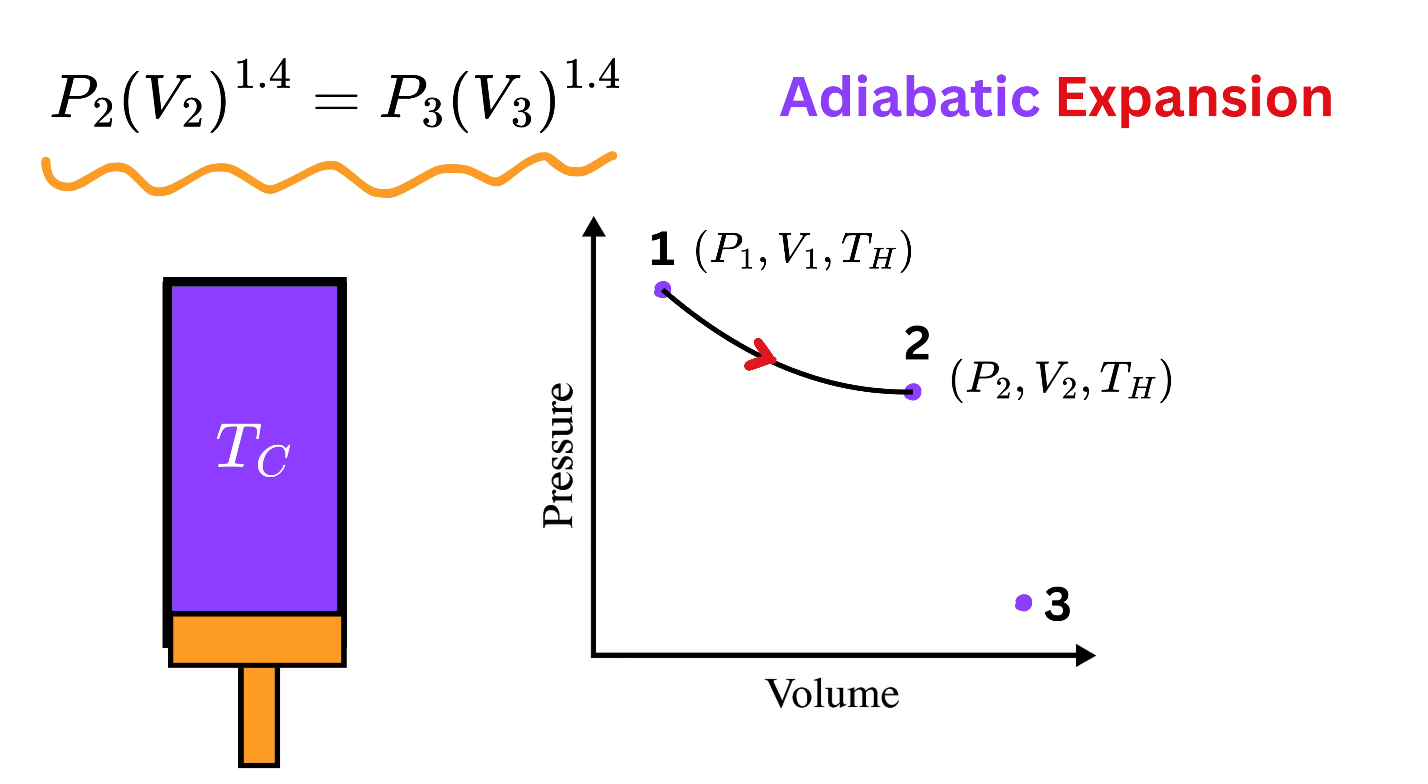This means that as the volume increases step by step from V2 to a larger value V3, the pressure must decrease more quickly than in the isothermal case, dropping from P2 to a smaller value P3 with temperature T_c. Both slope downward as volume increases, but the adiabatic one bends more sharply because the gas is cooling as well while it expands.